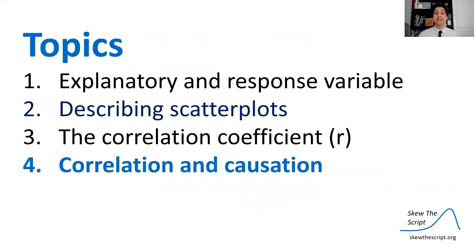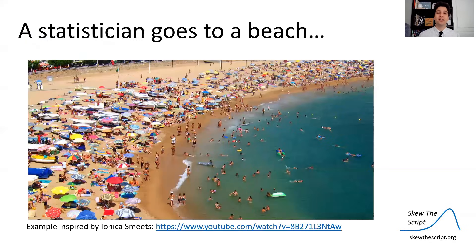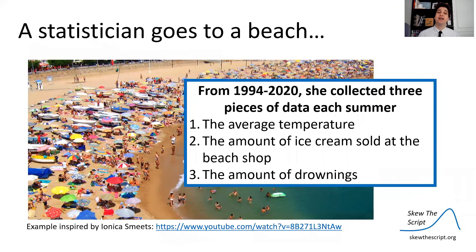We talked about one data set and we'll come back to it in a later lesson. But I want to talk about a key topic that's really going to define our unit: correlation and causation. A statistician goes to the beach every summer from 1994 to 2020 and collects three pieces of data: the average temperature during the summer, the average amount of ice cream sold at the local beach shop, and the number of drownings reported at the beach that summer.